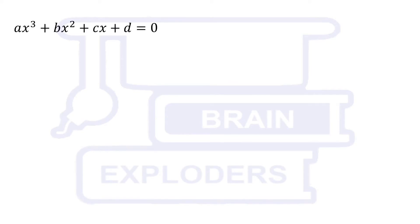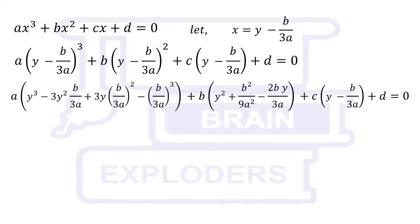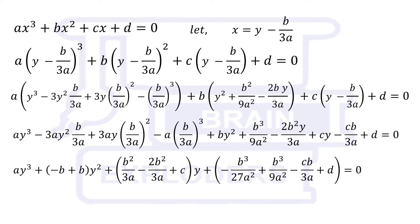In quadratic equation, we have assumed x equals to y minus b over 2a. In the similar way, here assume that x equals to y minus b over 3a. Substitute this value in cubic equation. y minus b over 3a whole cube is equal to y cube minus 3y squared b over 3a plus 3y b over 3a whole square minus b over 3a cube. On solving, some terms get cancelled and we get y cube plus c minus b squared over 3a times y plus 2b cube over 27a squared minus cb over 3a plus d equals to 0.